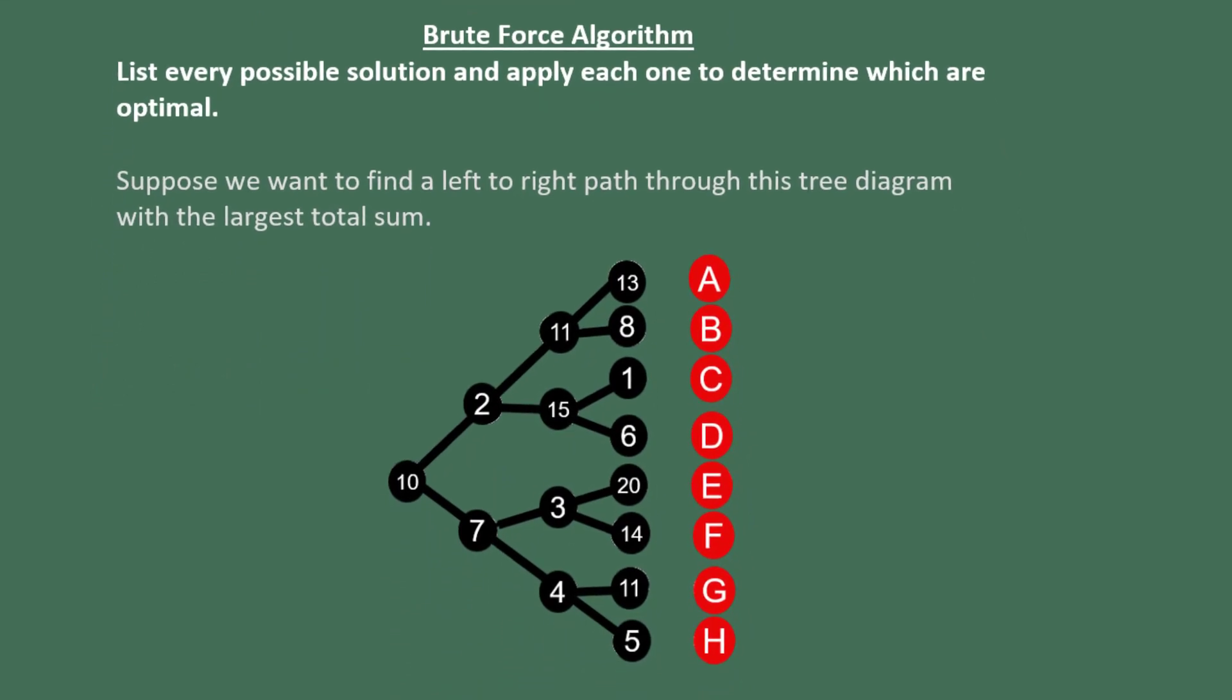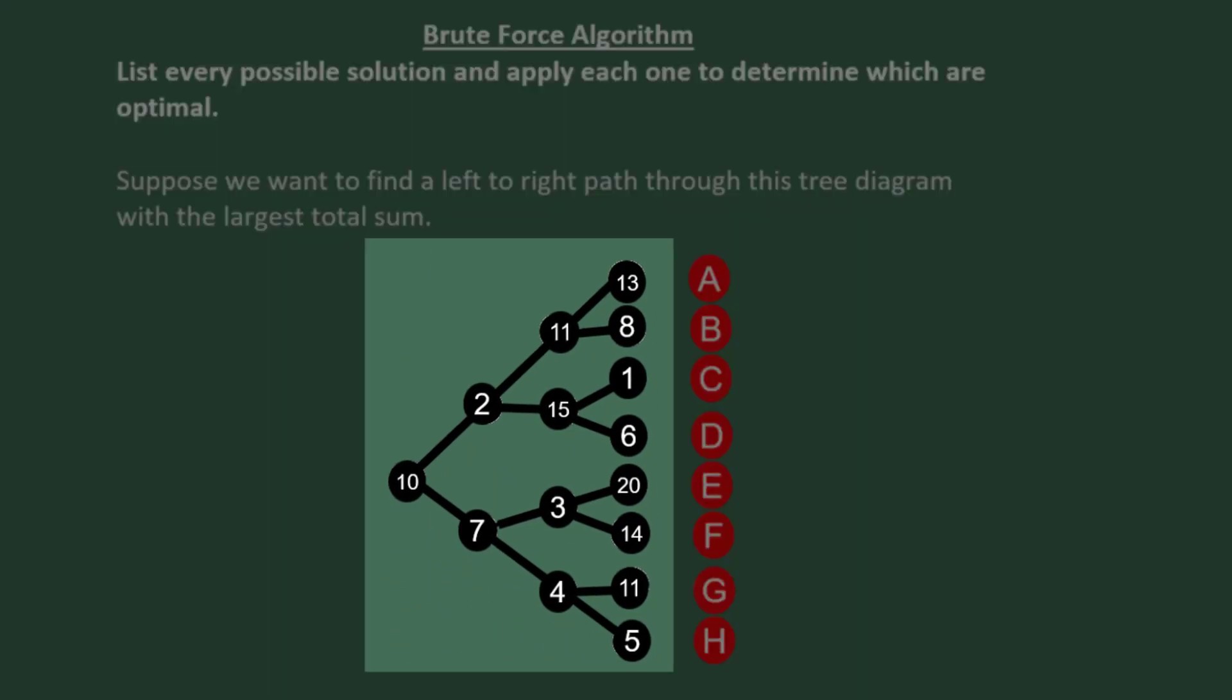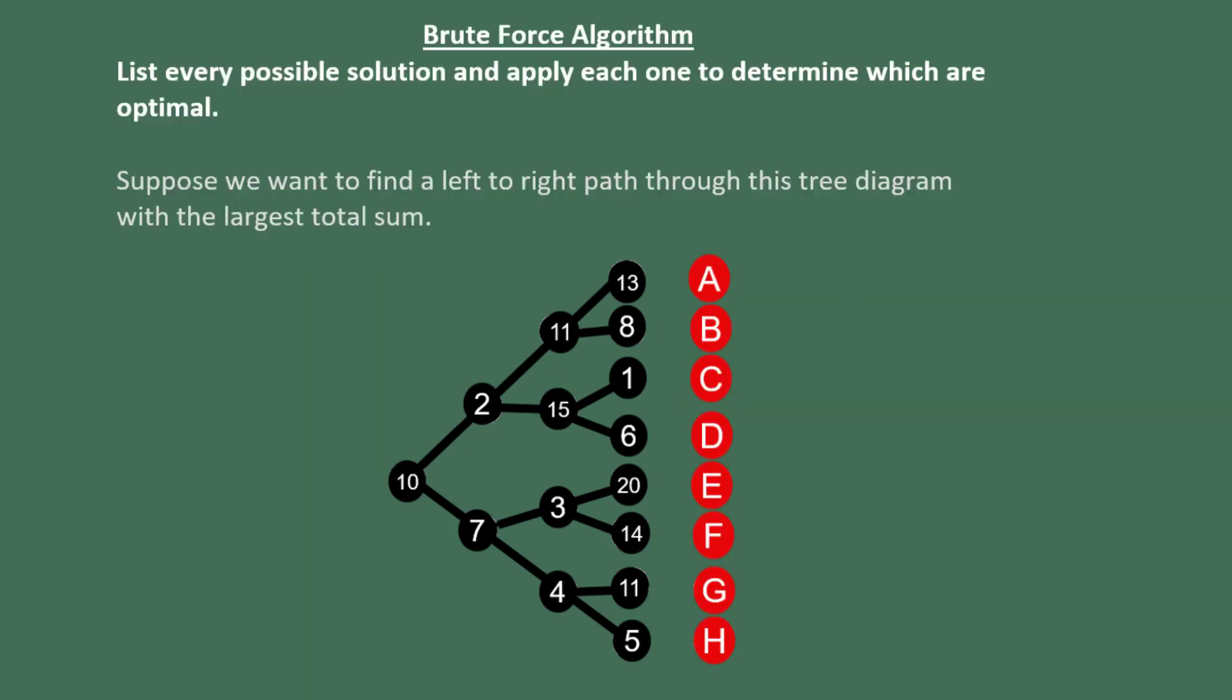Suppose you want to find a left to right path through this tree diagram that has the largest total sum when we add up the numbers. In red, you see the letters corresponding to the ends of the branches, just so that we can talk about them so we can be organized and name them.